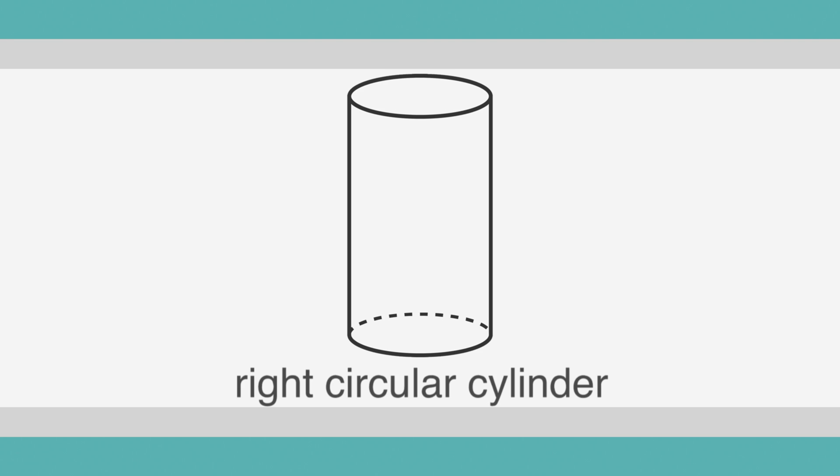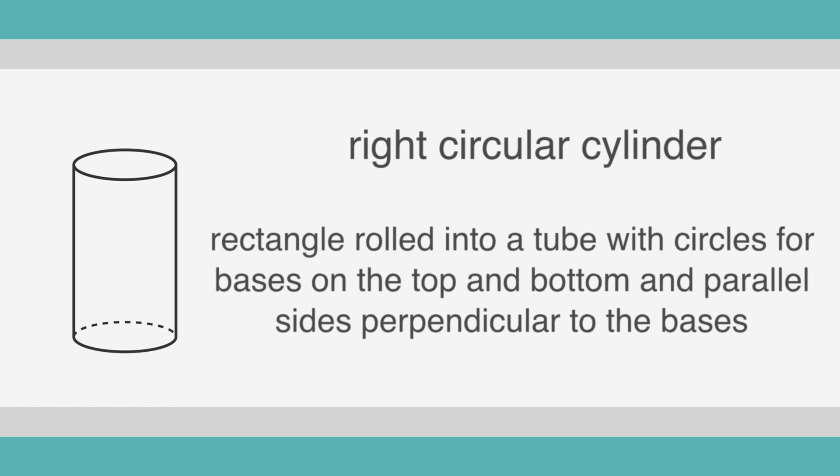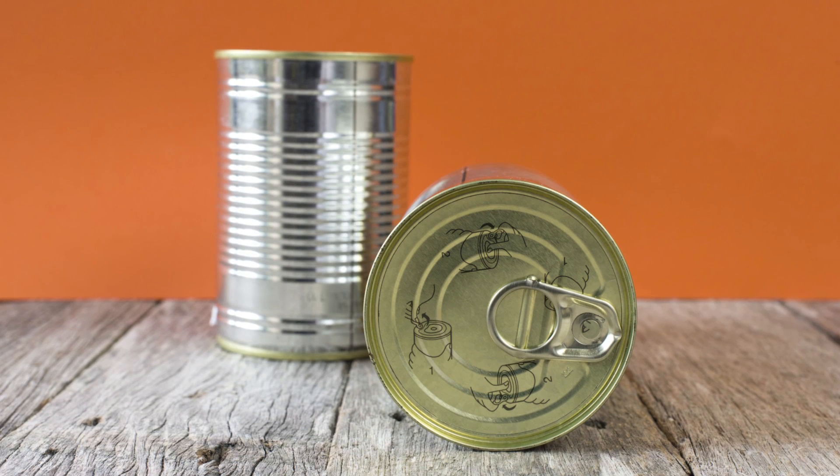A right-circular cylinder, which can just be called a cylinder, is basically a rectangle rolled into a tube with circles for bases on the top and bottom, and with parallel sides perpendicular to the bases, just like a can of your favorite food.